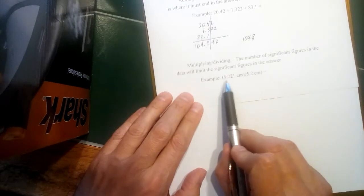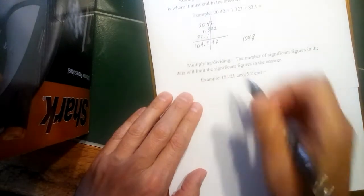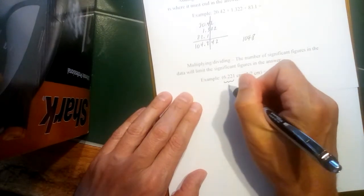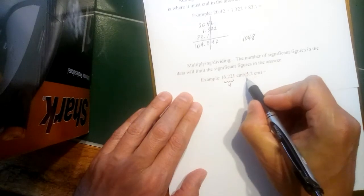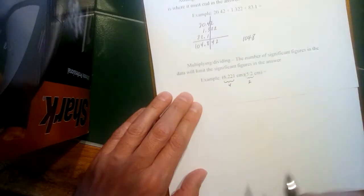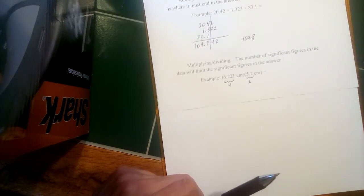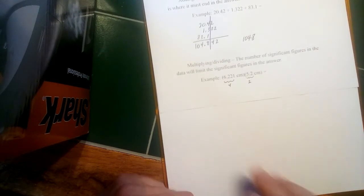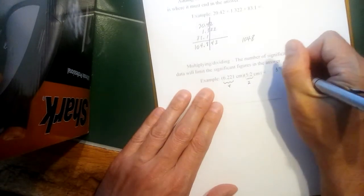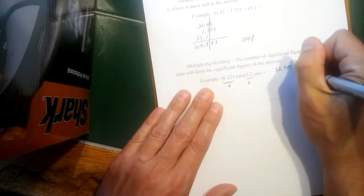So in the example, 6.2241, that would be four significant figures, but we're multiplying that by 5.2, which is only two significant figures. And that means this answer should be just two significant figures. So when I multiply this out, 6.221 times 5.2, my calculator says 32.3492.